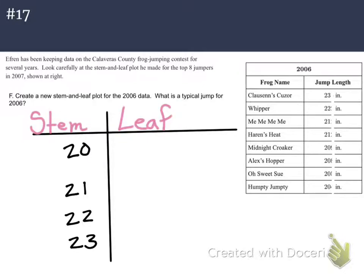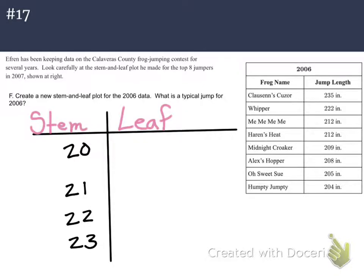It doesn't matter where you start. If you want to start with your smaller numbers first, you're welcome to. If you want to start with your bigger numbers, it's preference. Every single stem and leaf plot I found online had it in least to greatest order — the smallest number at the top and the biggest number at the bottom. So I'm going to follow suit, because I haven't found any example that goes in the other order. Could you still read it? Totally. Would it change your data? No. But it's just one of those things the math community has decided to always do it that way.